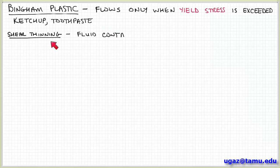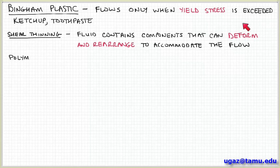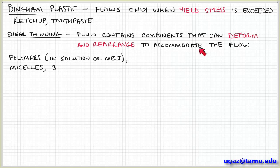Shear thinning behavior is probably, I'd say, some of the most common behavior that is observed in non-Newtonian fluids. And this arises generally because the fluid contains components that are able to deform or rearrange in some way to accommodate the flow. So as the flow becomes faster, or more correctly, I should say, the deformation rate becomes faster, these components can change their shape in order to accommodate that.